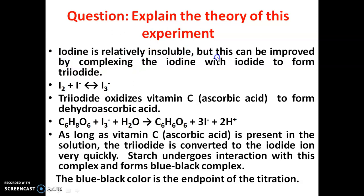The iodine can be improved by complexing the iodine with iodide to form triiodide: I2 plus I minus gives I3 minus. Here I3 minus means triiodide. This triiodide oxidizes vitamin C.